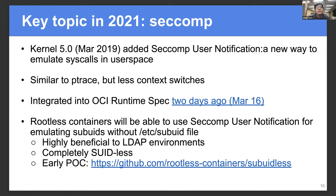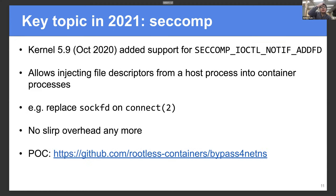And kernel 5.9 added support for seccomp ioctl NOTIF_ADDFD. This is a new feature that allows injecting file descriptors from a host process into container processes. So we can replace the file descriptor of the socket on the connect syscall. So we can remove the overhead of user-mode networking called SLIRP. This is very much faster compared to previous rootless containers. We have some proof-of-concept code, but it's not ready for production at this moment.